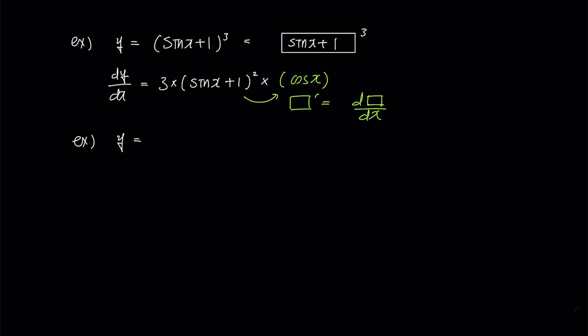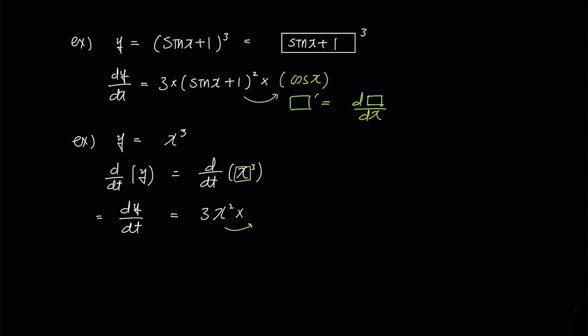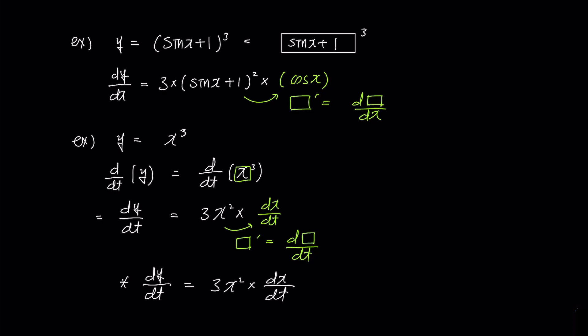Let's take a look at an example of implicit differentiation. We have y equals x to the power of 3 again, but this time we are going to differentiate with respect to t. Differentiating both sides with respect to t, the left side becomes dy over dt, and the right side becomes 3x squared times box prime. Since x is in the box and we are differentiating with respect to t, box prime becomes dx over dt. So the equation is dy over dt equals 3x squared times dx over dt. Unlike the previous problems, since we differentiated with respect to t, we must not cancel out the dx over dt term and must leave it.